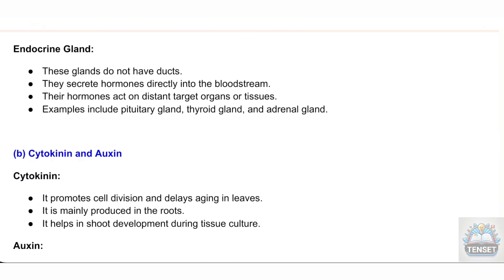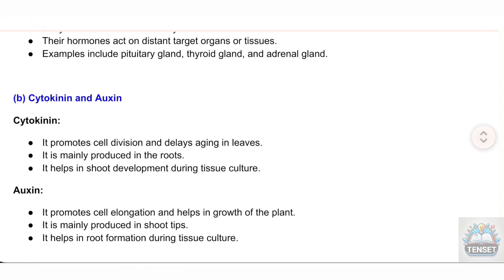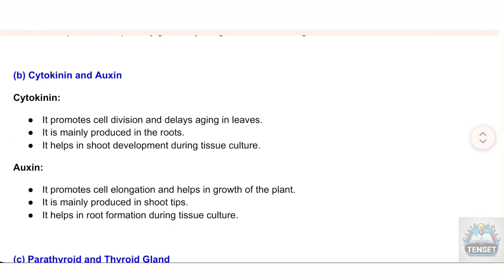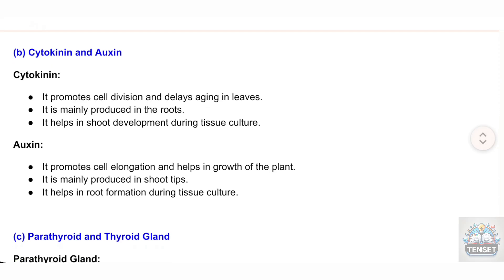B) Cytokinin and Auxin. Cytokinin: It promotes cell division and delays aging in leaves. It is mainly produced in the roots. It helps in shoot development during tissue culture. Auxin: It promotes cell elongation and helps in growth of the plant. It is mainly produced in shoot tips. It helps in root formation during tissue culture.